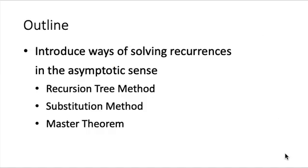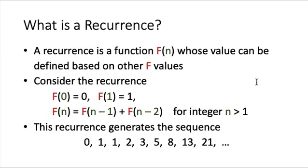In this lecture we will talk about several ways of solving recurrences, but unlike a discrete math course we are not going to solve the recurrence exactly. Instead we are going to find asymptotic solutions of a recurrence. We will introduce three different ways: the first one is called the recursion tree method, then we will talk about the substitution method, and finally we will give the master theorem.